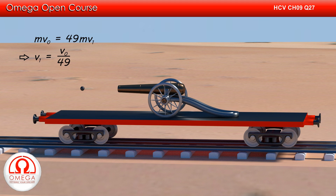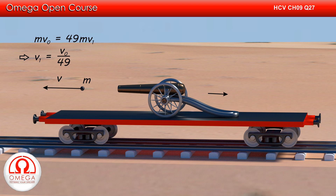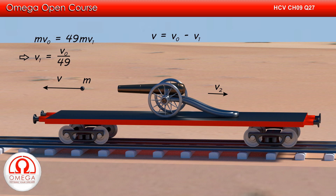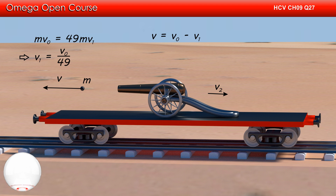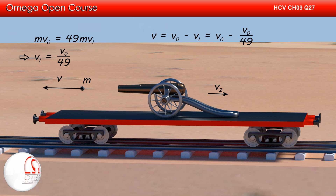Let us assume that when the second shell is fired, its speed with respect to the ground is V and the required speed of the car-gun system becomes V2. As per the question, the speed of the shell is V0 with respect to the state of the gun before firing. But before firing the second shell, the gun was moving backwards with speed V1. Therefore, the speed of the shell with respect to the ground, V, is equal to V0 minus V1. Putting the value of V1, we get V = V0 - V0/49 = 48V0/49.